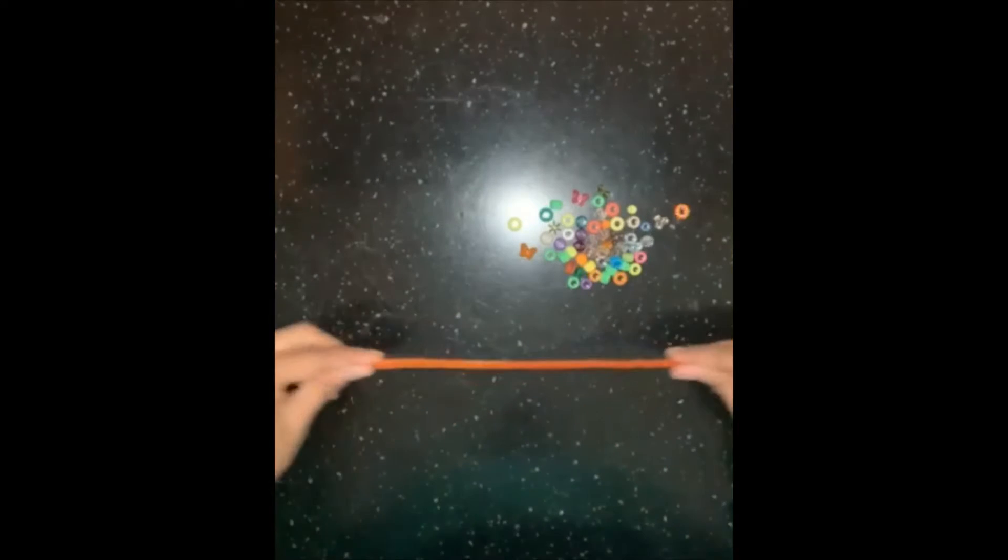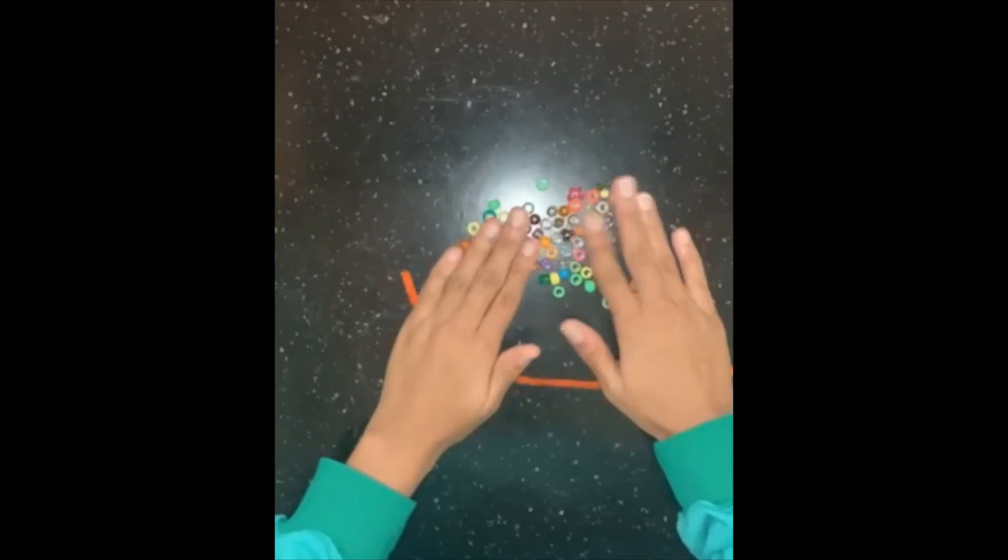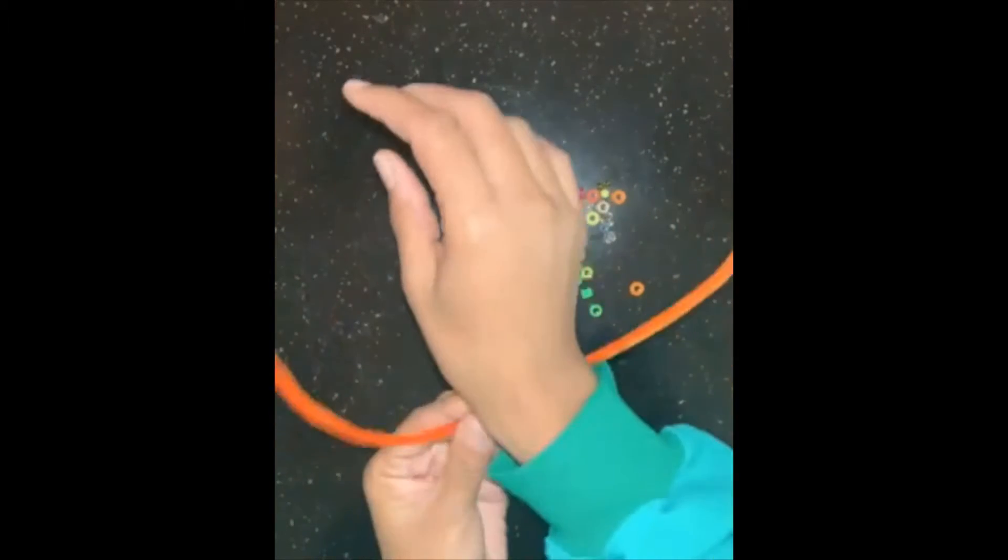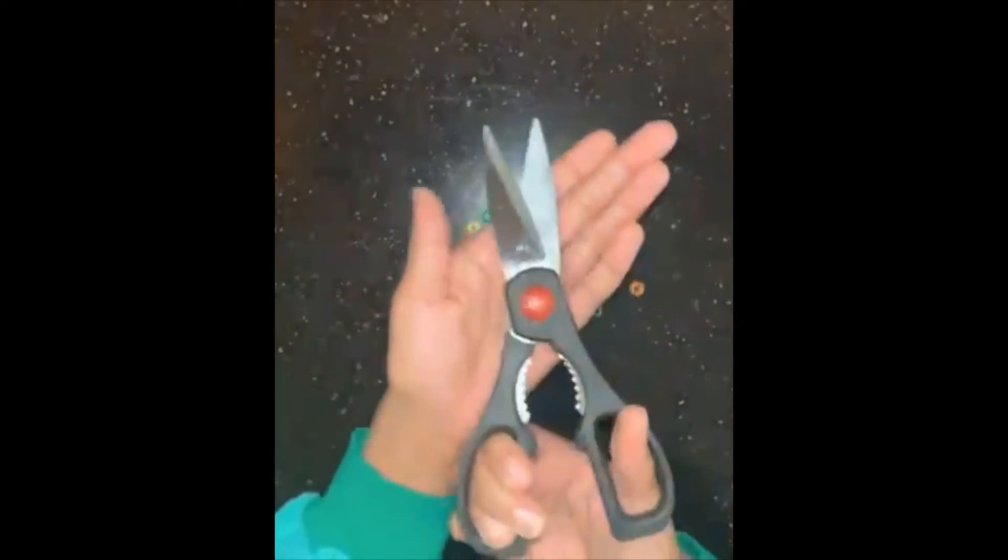Hi guys, today we're going to be making friendship bracelets. The materials you will need are one pipe cleaner and beads. The beads we provided come in different colors, shapes, and sizes.